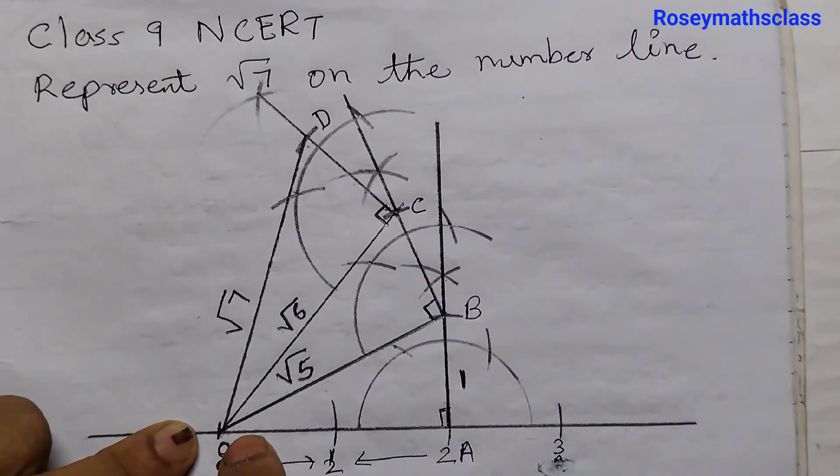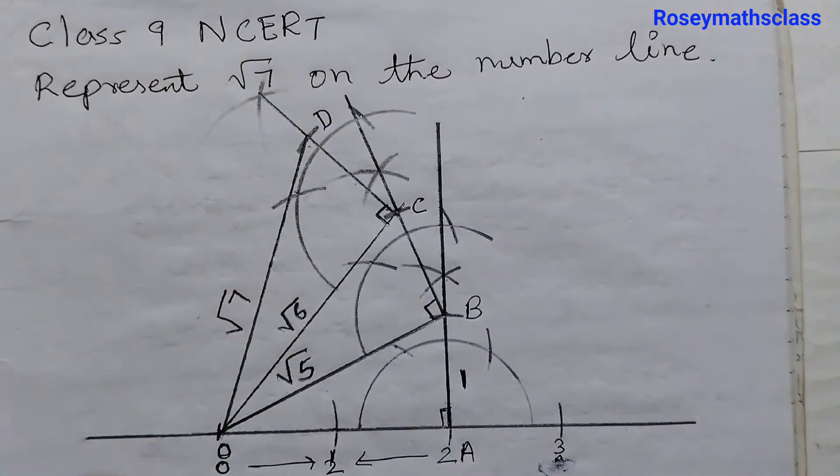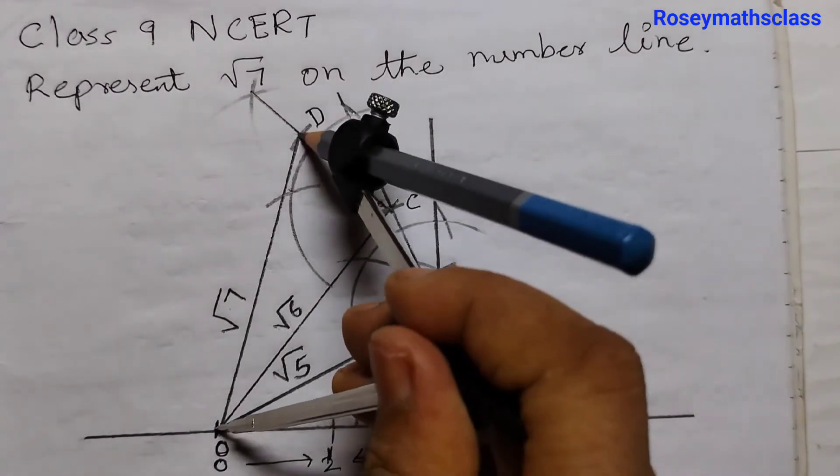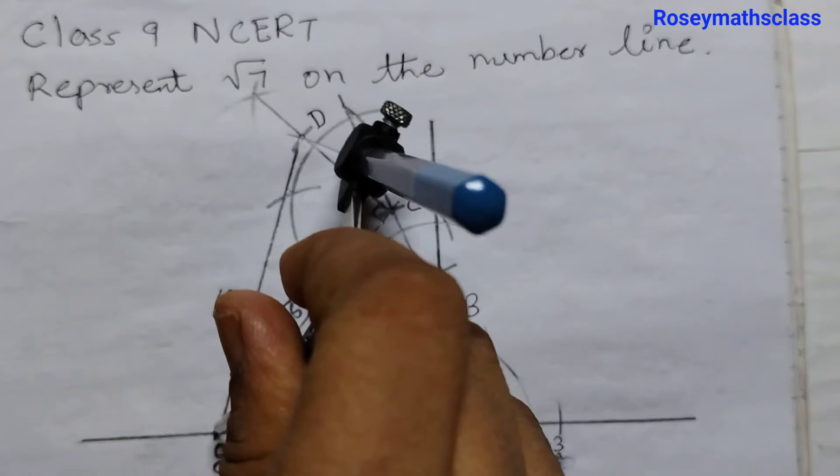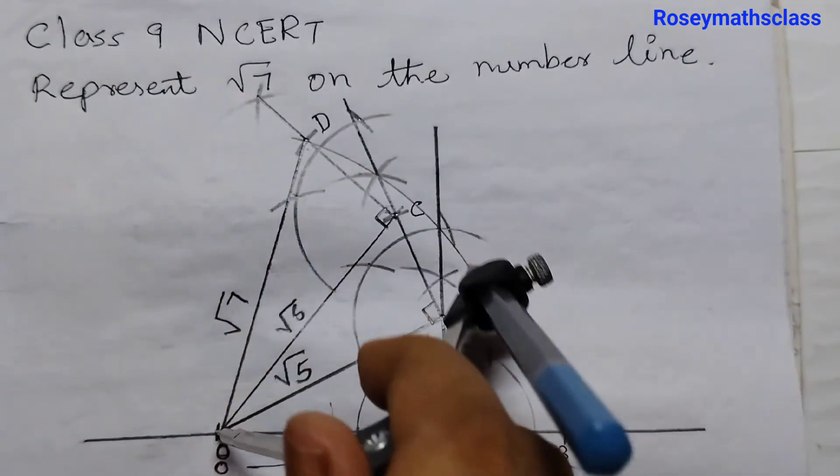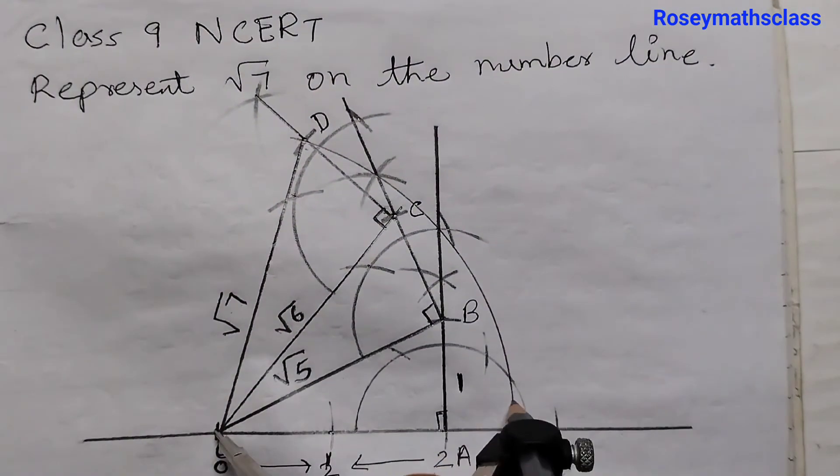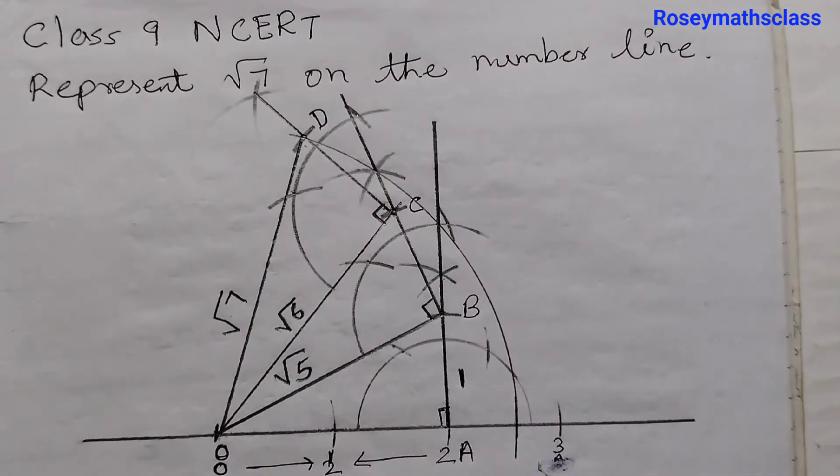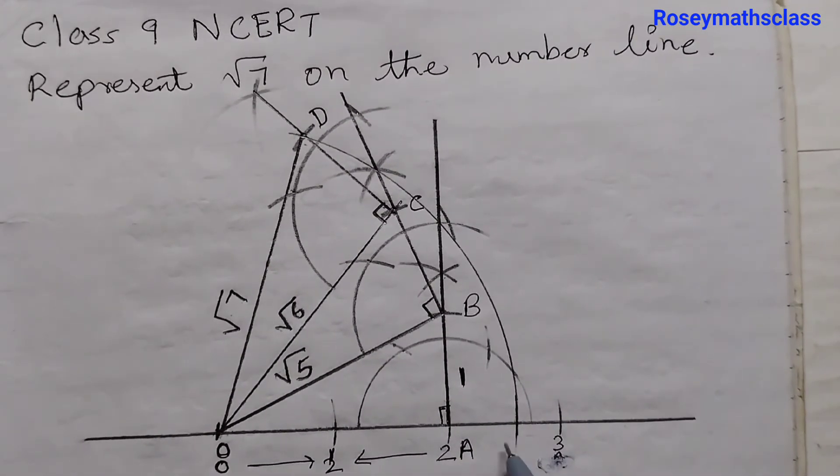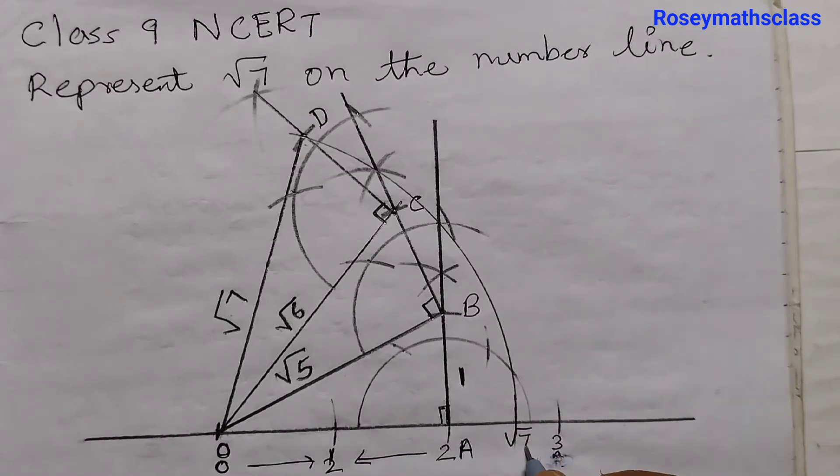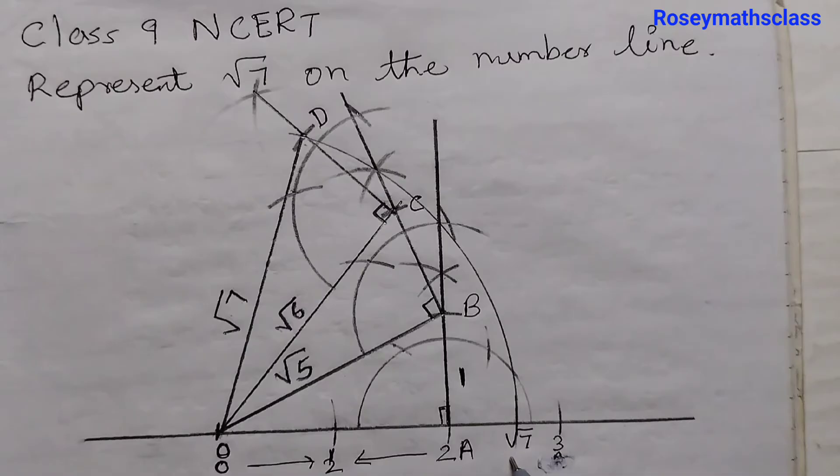Now measure this length O, D. So this is the measurement of O, D. Taking this as the radius, you draw an arc intersecting on the number line. This point here represents square root of 7. Let's label this as E.